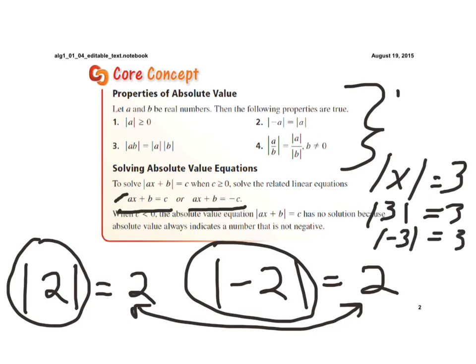So when we rewrite these equations, we have to make sure we set what's inside the absolute value equal to the number given, but then also what's inside the absolute value is set equal to the opposite of that number.